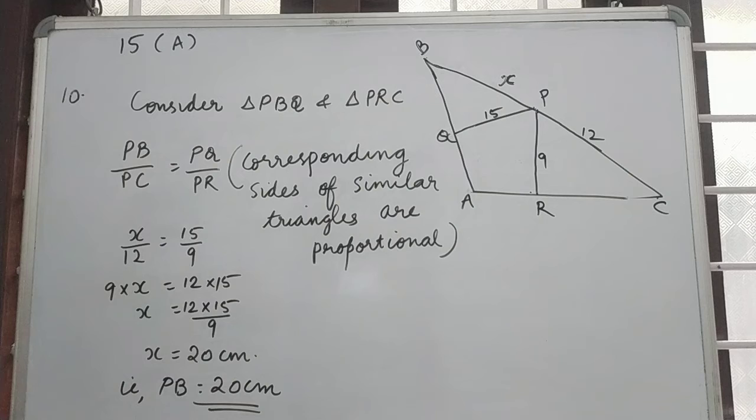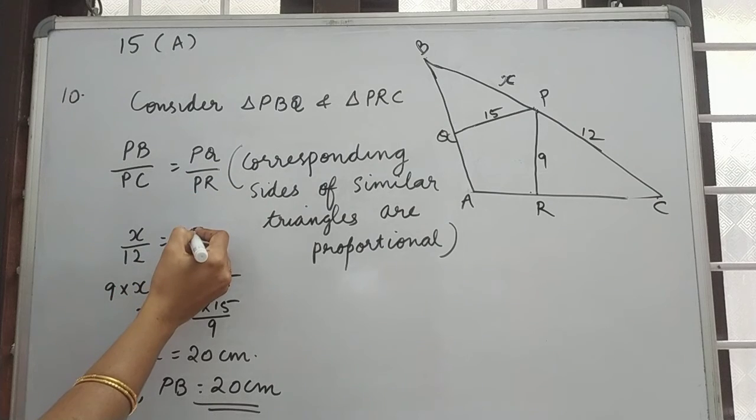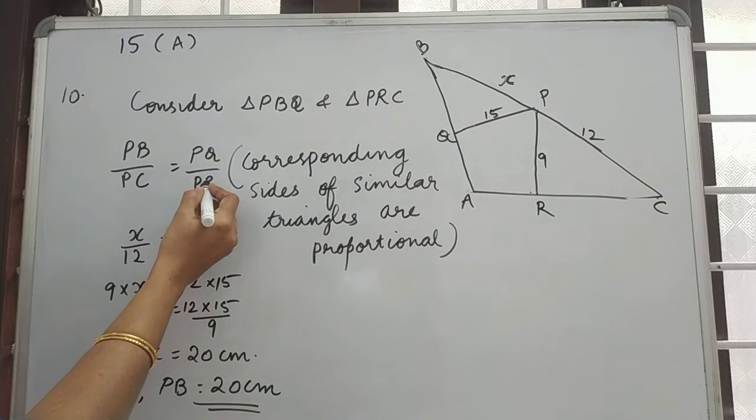Given PB as X and PC as 12, so X divided by 12 is equal to 15 divided by 9.